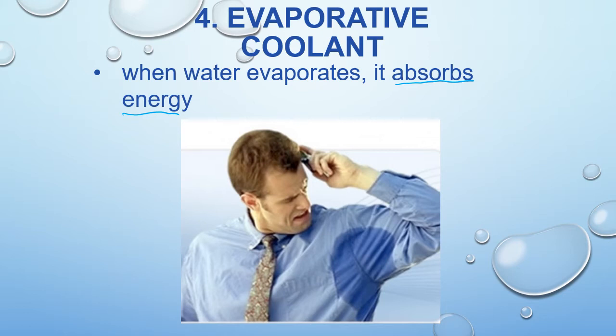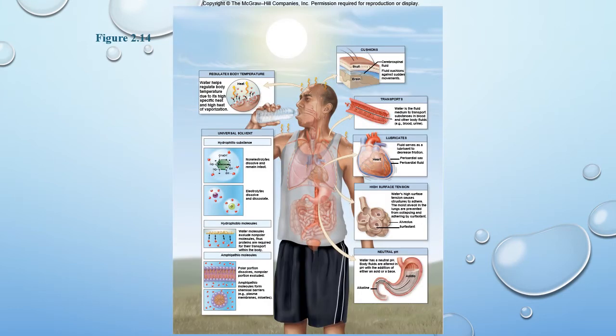We move those water molecules out onto the surface of the skin, and as they evaporate — as they go from a liquid state into a gaseous state — it takes a lot of energy with it along the way. We can use that process to allow for temperature regulation: we can regulate our body temperature by sweating, adding water to the surface of the body, and it's going to cool us off.